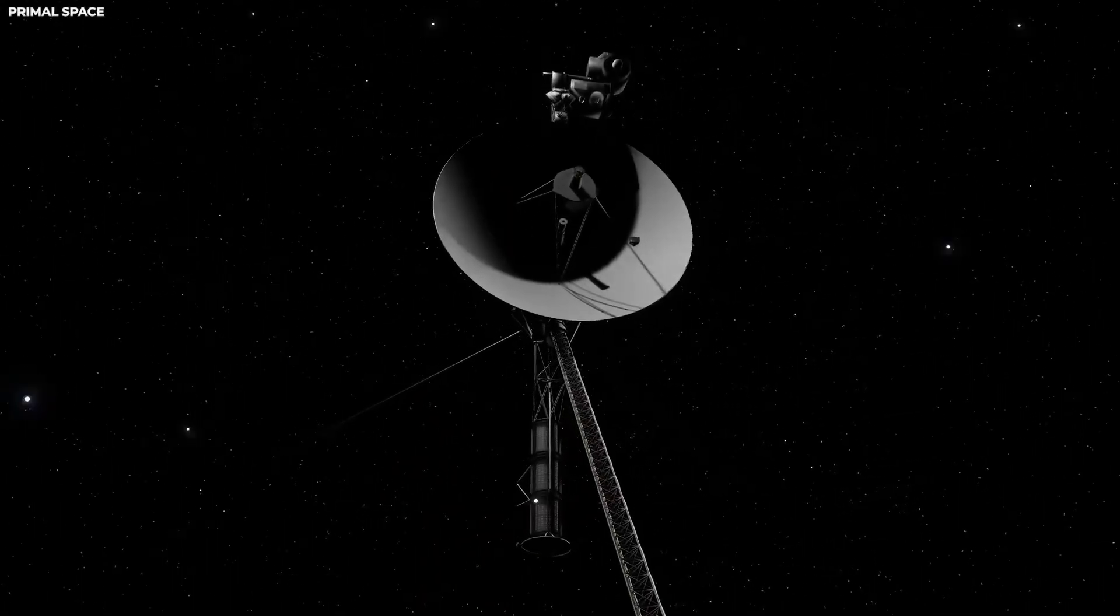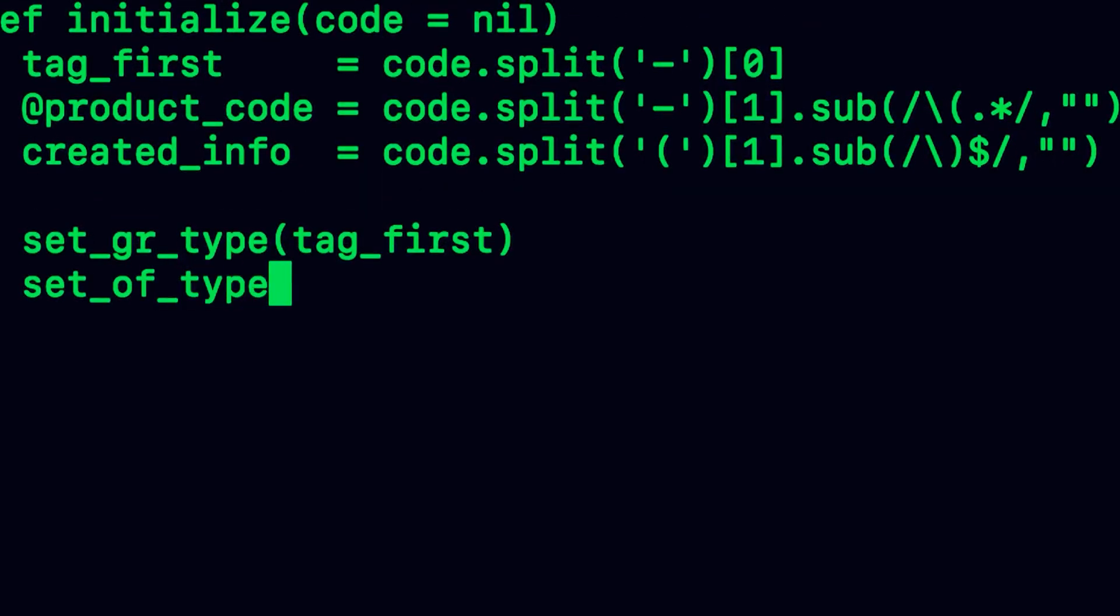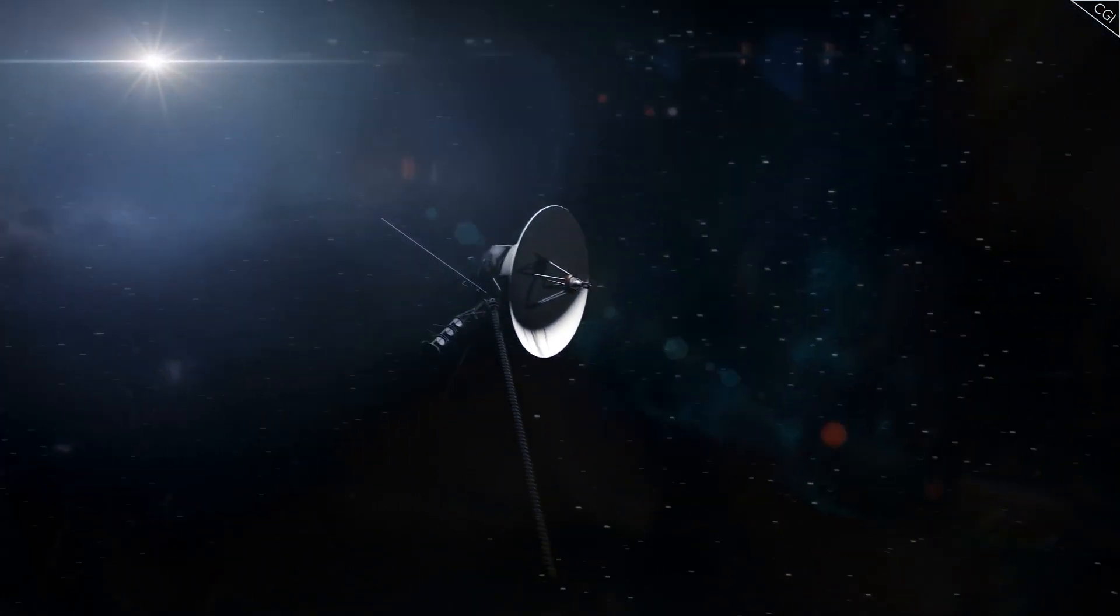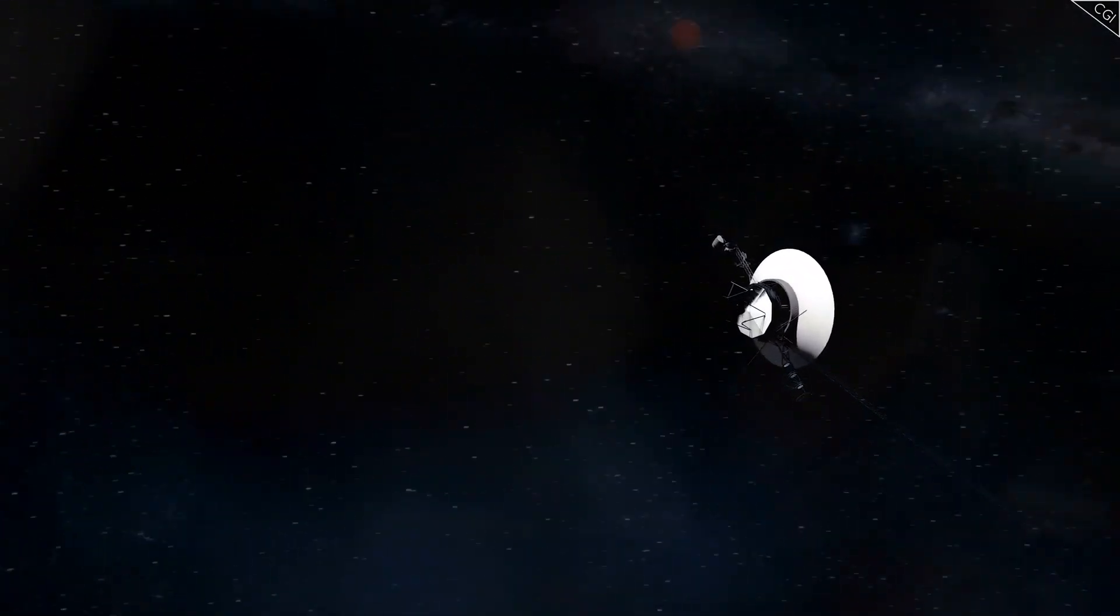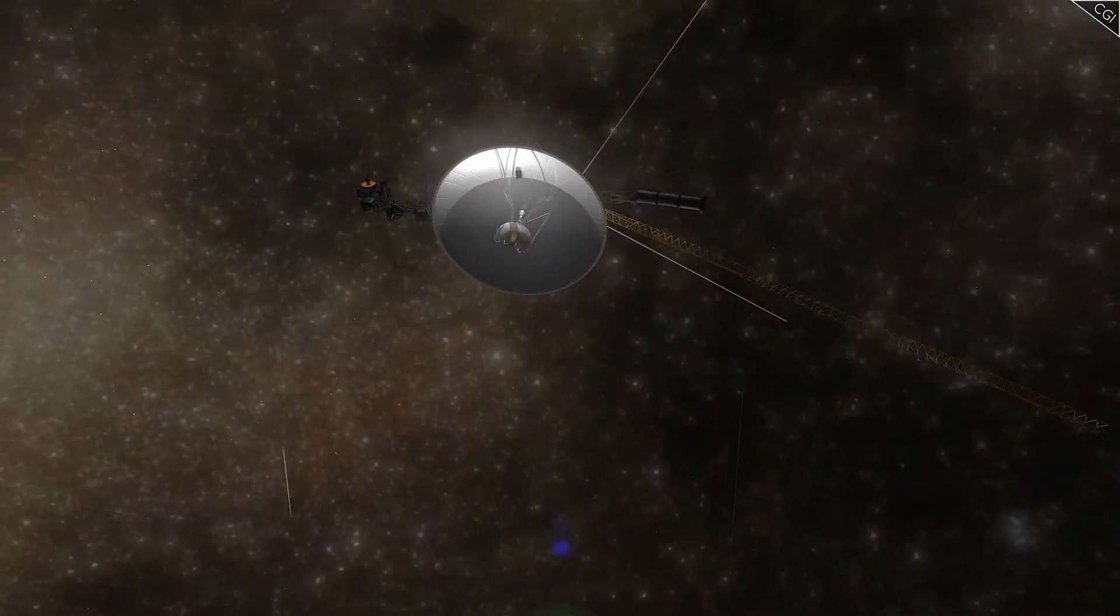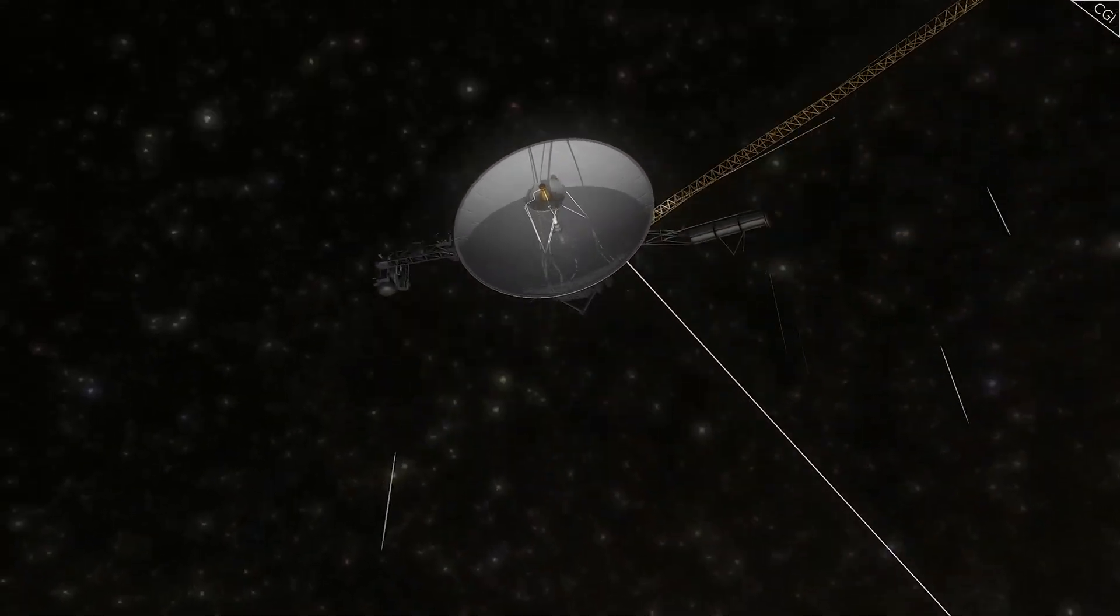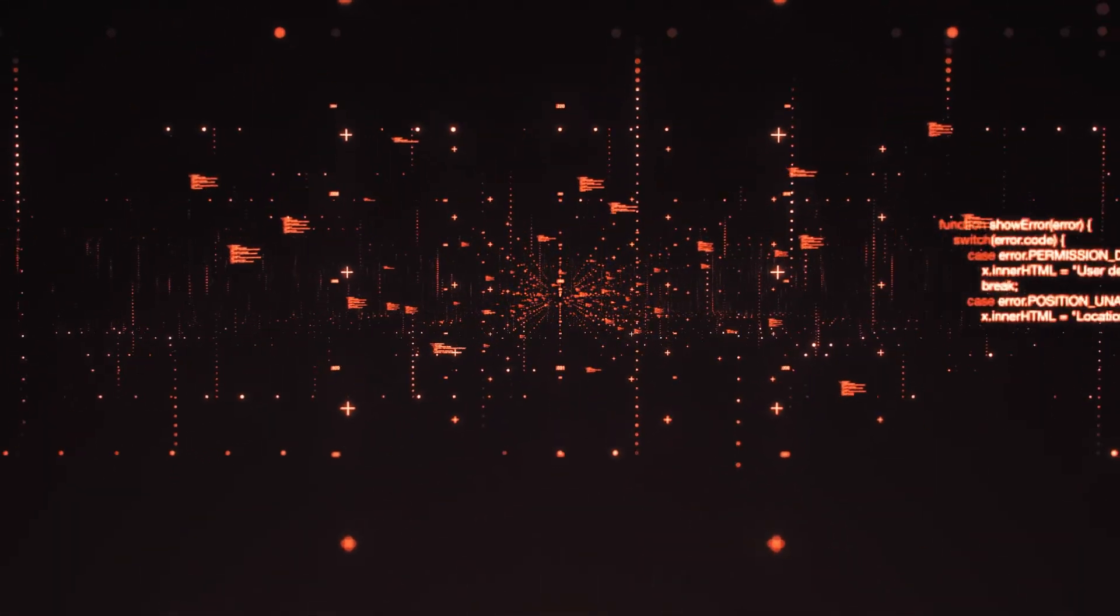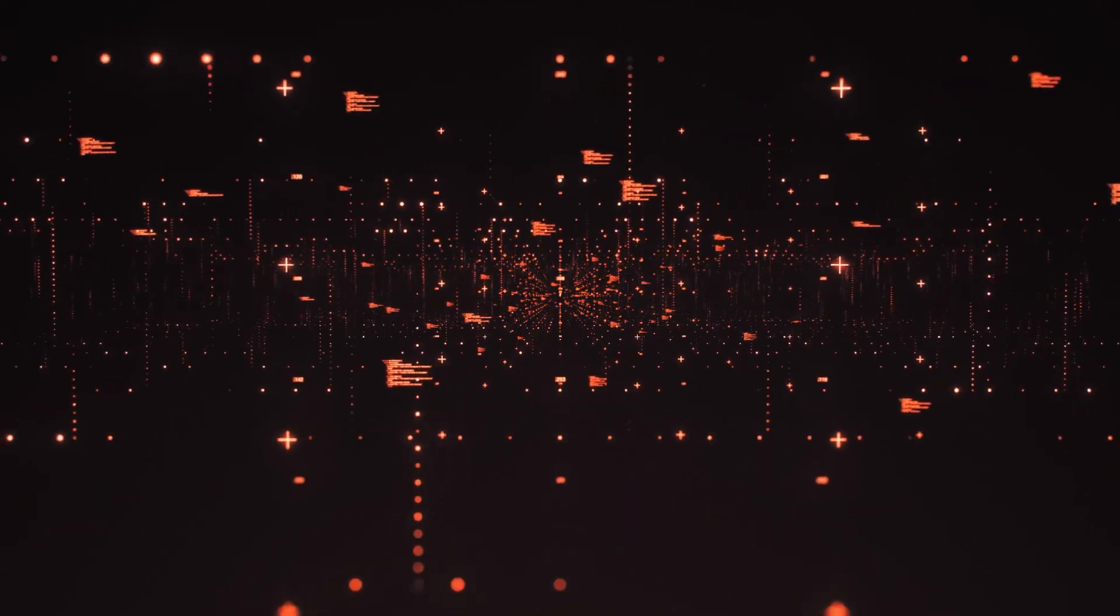Then something unthinkable happened. A mirrored signal bounced back containing the exact frequency profile of one of Voyager's earliest broadcasts, a data transmission sent during its Jupiter flyby in 1979. But this version had been modified. Embedded within it were anomalies, slight distortions that, when decoded, referenced Voyager's original telemetry code, now long obsolete.